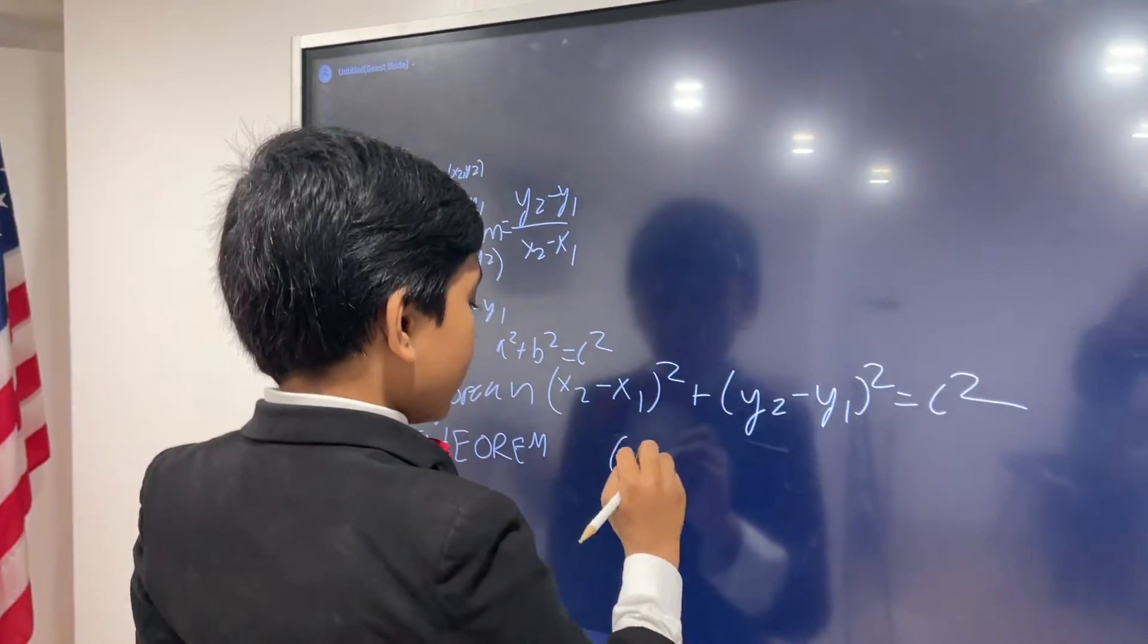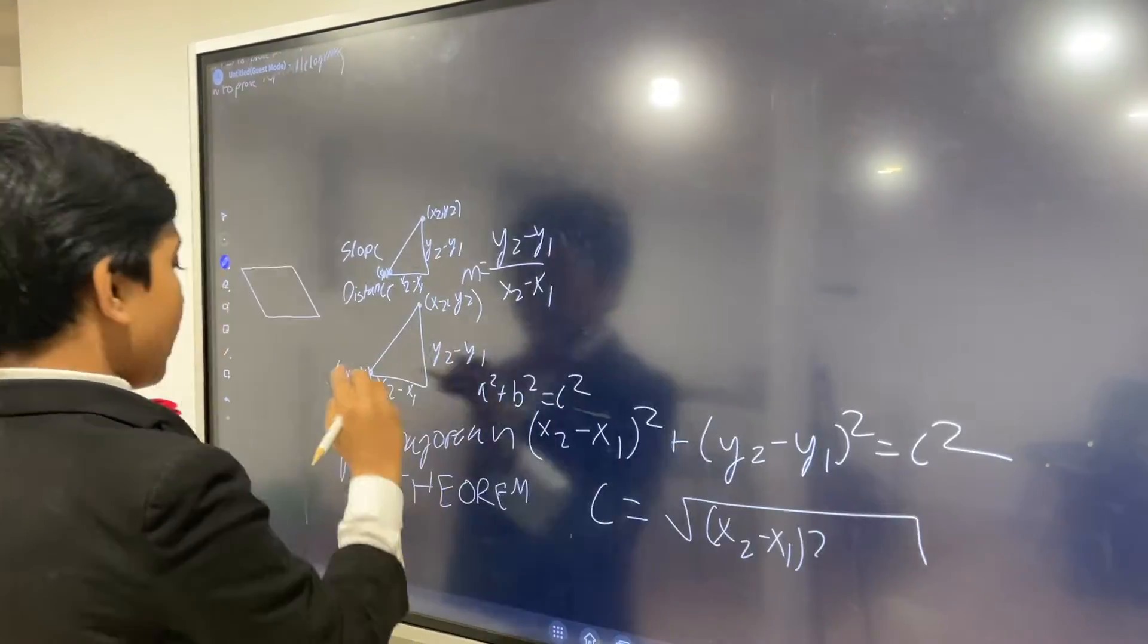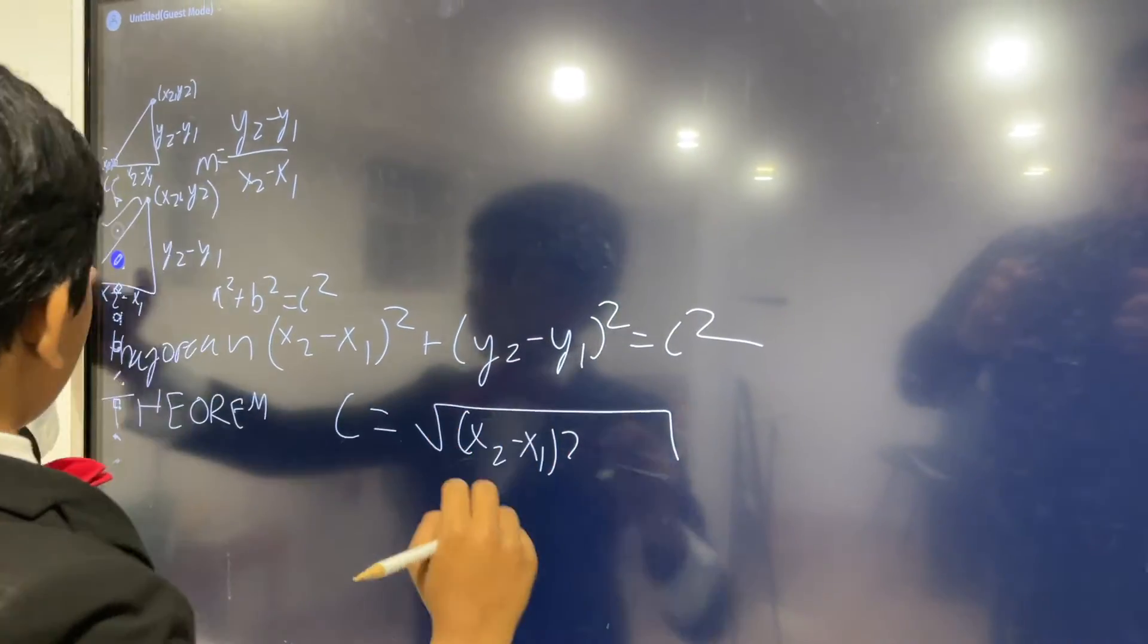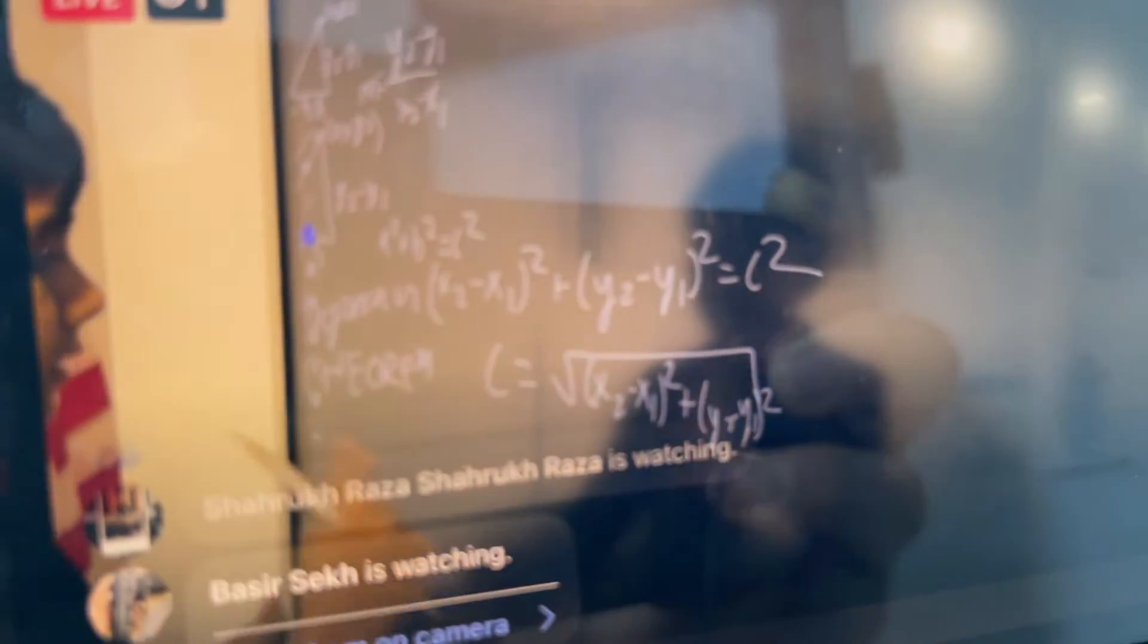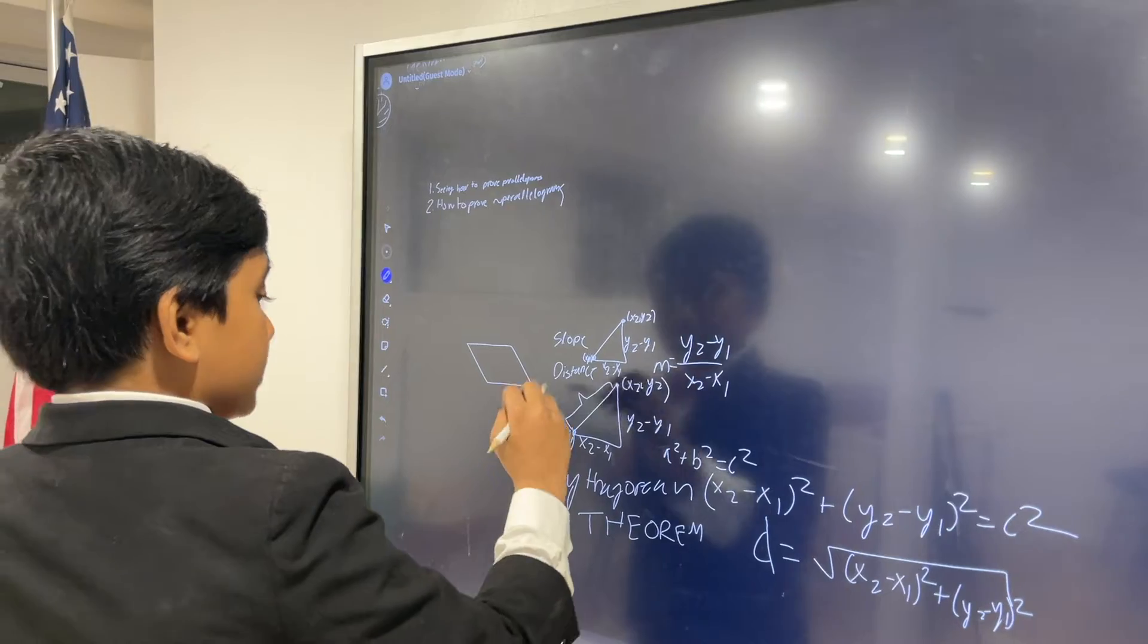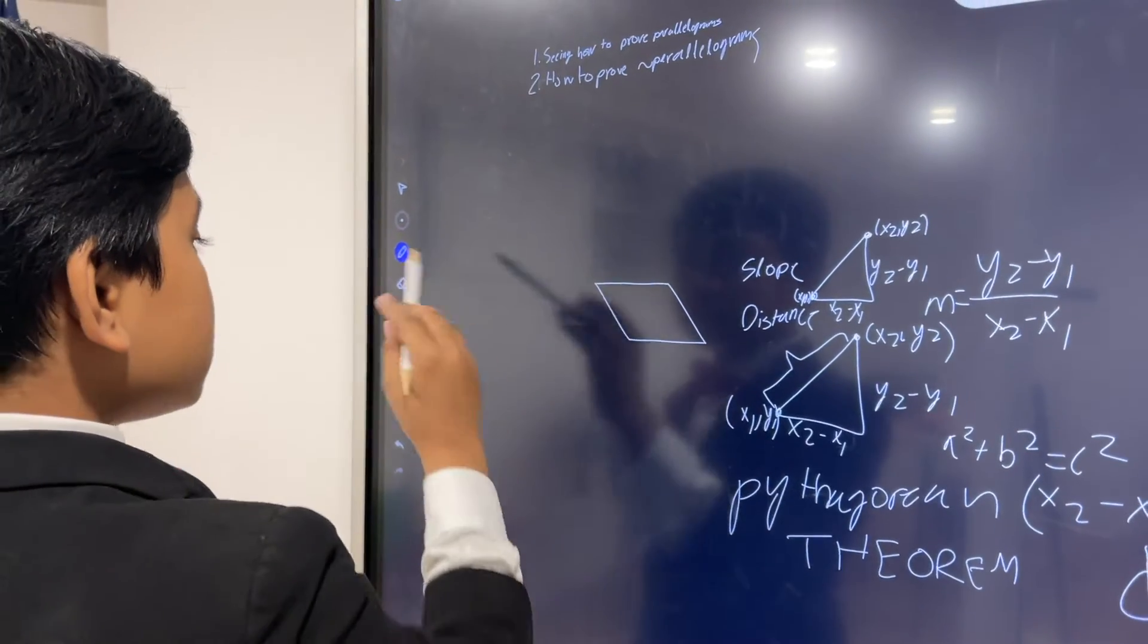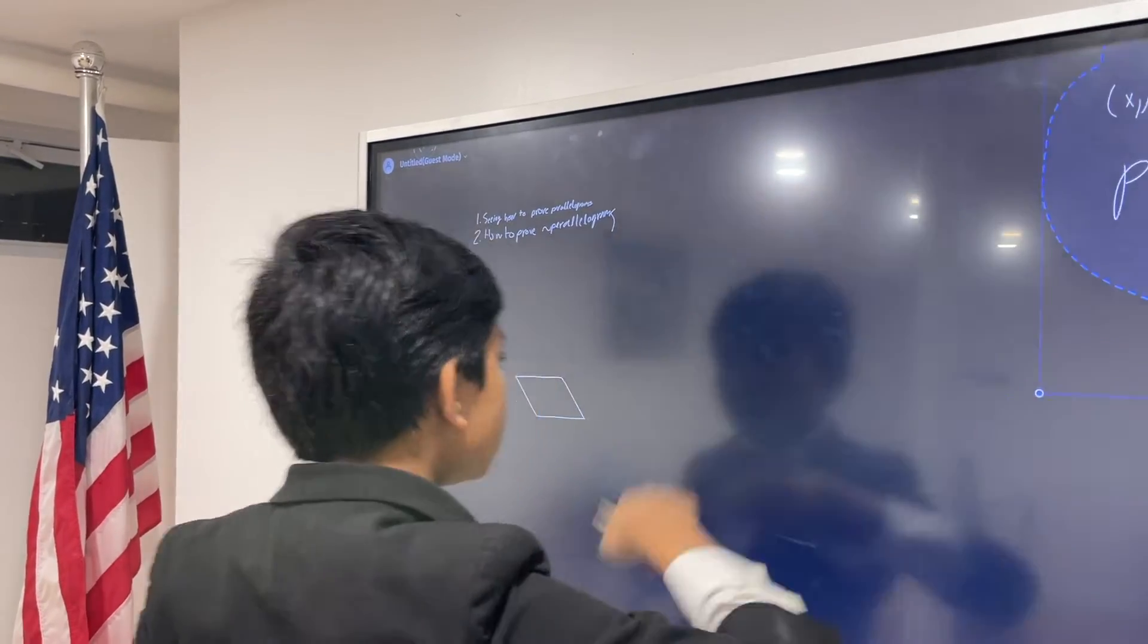So now square rooting everything, we get c is the square root of x2 minus x1 squared plus y2 minus y1 squared. And remember, c is what we're trying to find since this is the distance, and the hypotenuse is going to be distance, so c is d. You also need to know the midpoint formula that was covered in a previous video.